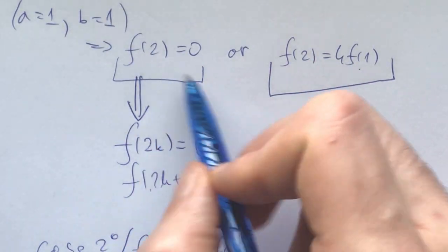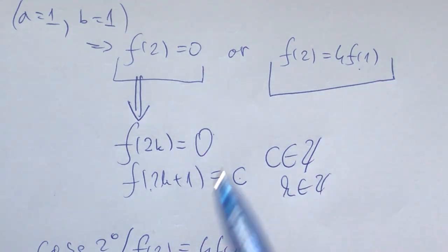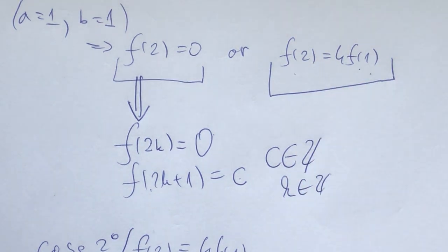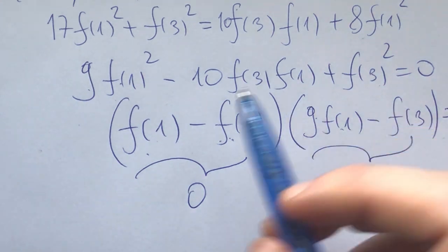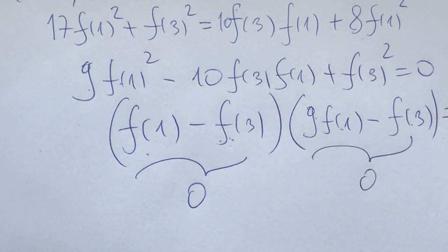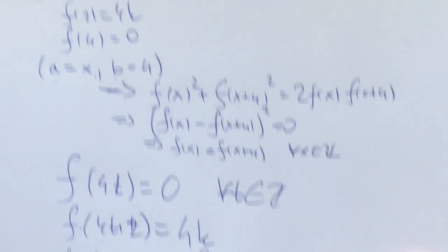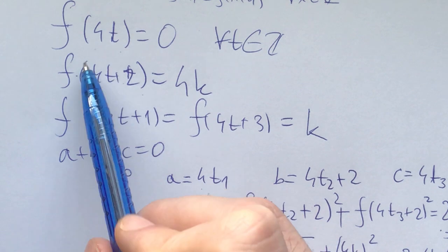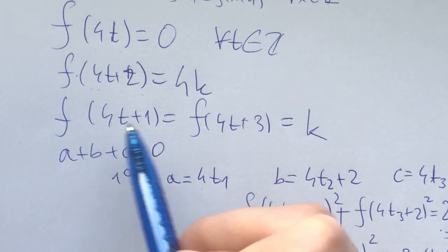We then moved to the case f(2) = 4f(1) and plugged in a=1, b=2. This gave two sub-cases: f(3) = f(1) or f(3) = 9f(1). In the sub-case f(1) = f(3), we found f(4) = 0, leading to the solution family: f(multiples of 4) = 0, f(numbers giving remainder 2 mod 4) = 4k, and f(odd numbers) = k.